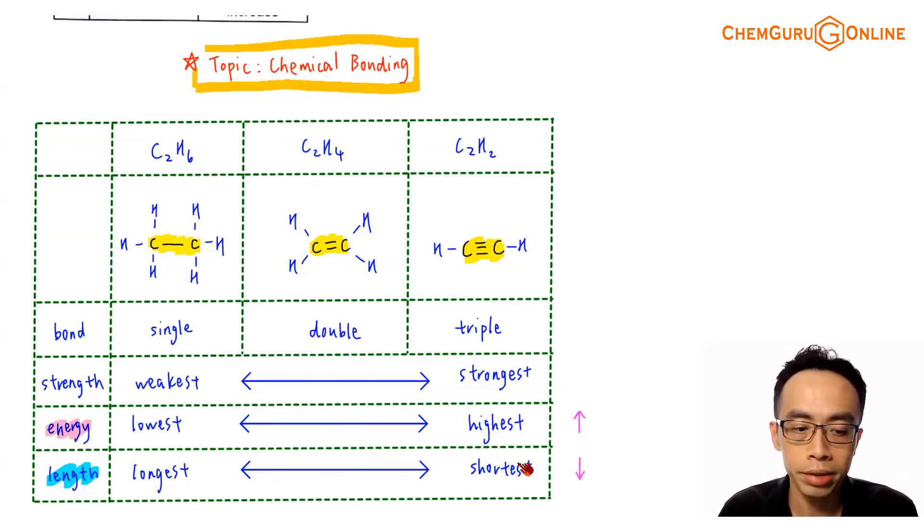This is actually a pretty simple exercise. We notice that in terms of bond energy from C2H6 all the way to C2H2, bond energy from lowest to highest, there is an increase in bond energy, whereas involving bond length from the longest to the shortest, there is a decrease in bond length.